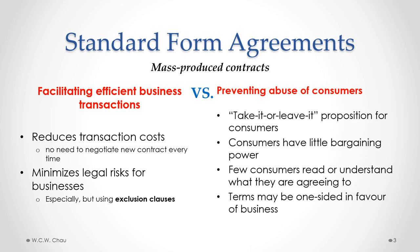However, there is a concern that these agreements could be used to abuse consumers. Standard Form Agreements are a take-it-or-leave-it proposition — when a consumer is given one, there is little or no opportunity to negotiate any of the terms. The consumer either has to accept the contract or not enter the transaction at all. Consumers generally have very little bargaining power, and very few consumers read or understand what they are agreeing to. Thus, the terms are quite often one-sided in favor of the business.